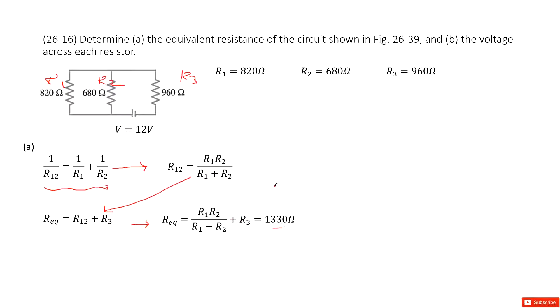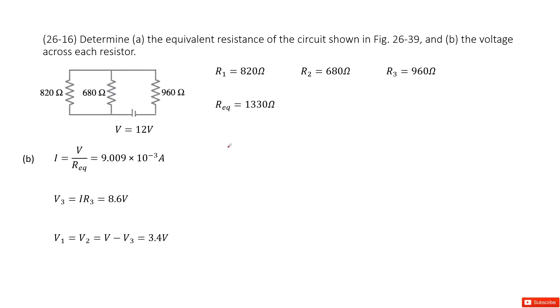The second one, we need to find the voltages across each resistor. So the equivalent resistance is defined as 1330 ohms. So the current should be the total voltage divided by equivalent resistance, which is around 9.009 × 10^-3 A.